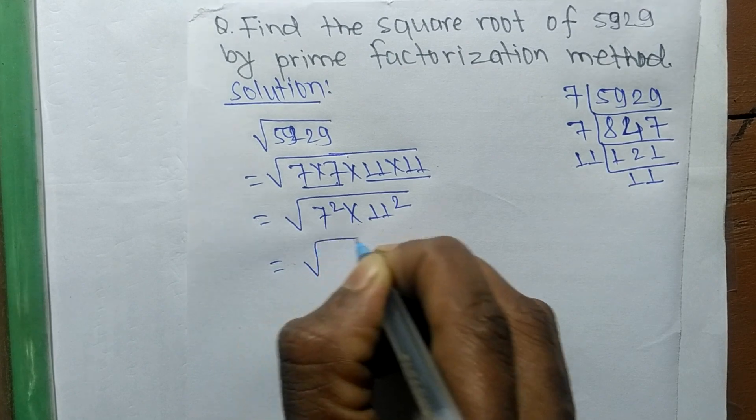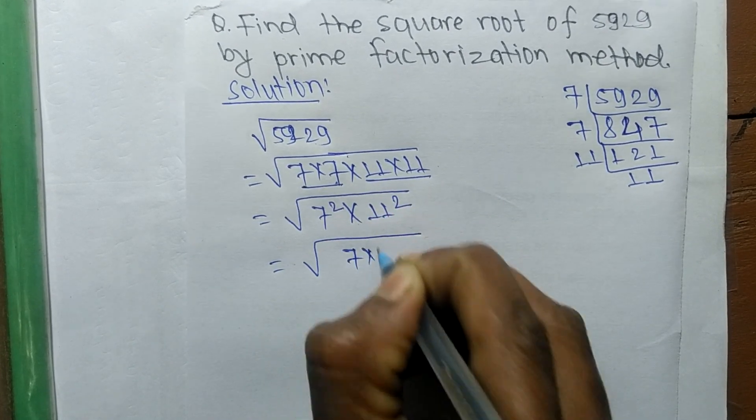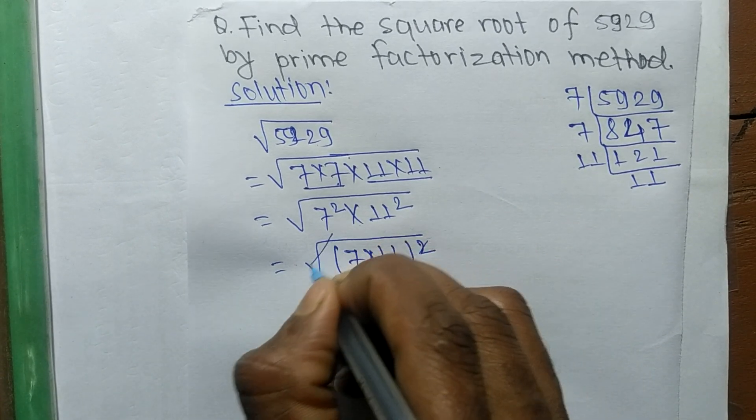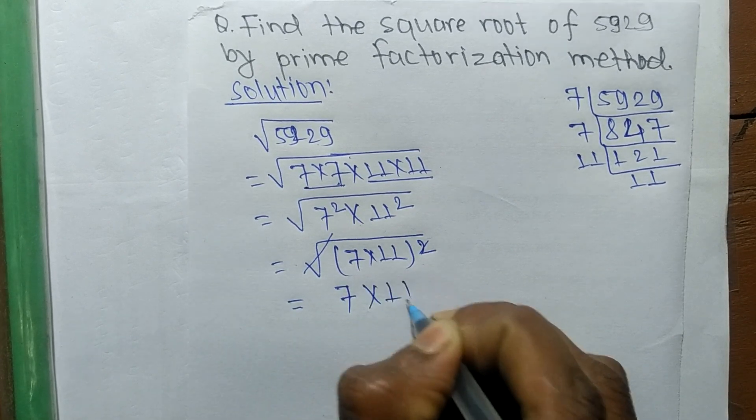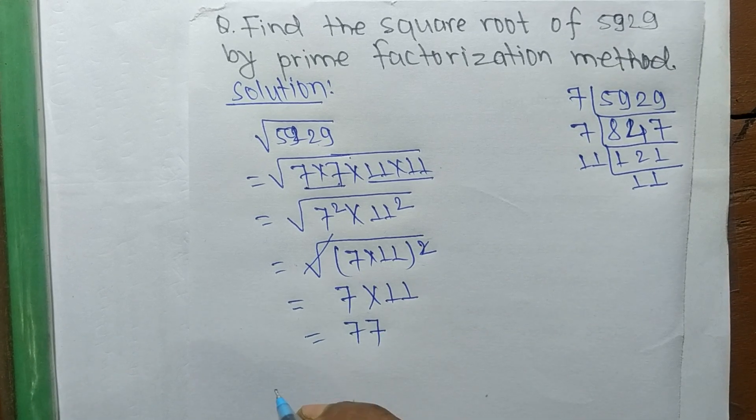So a square is present in both, so we make it 7 into 11 whole square. So a square and a square root cancel each other. So remaining is 7 into 11, so it is equal to 77.